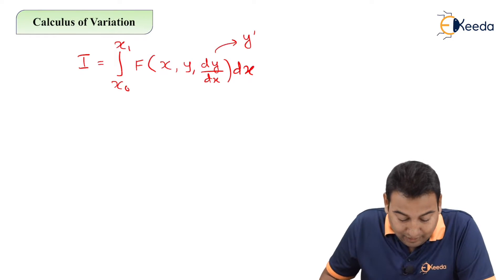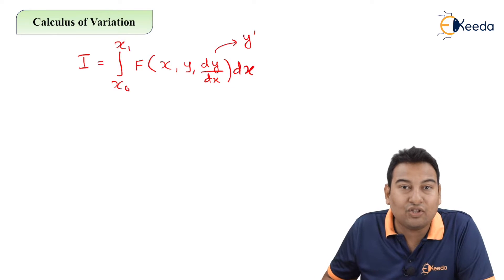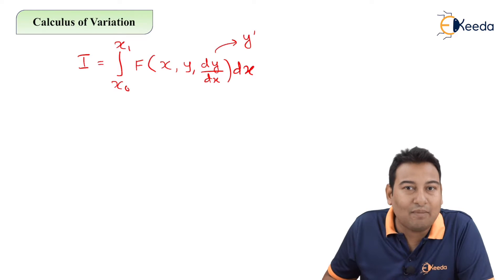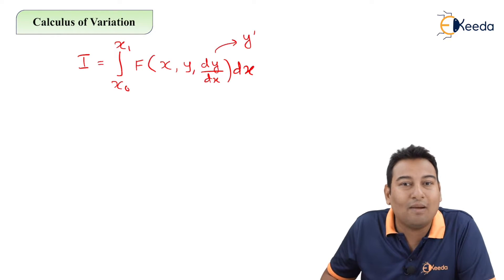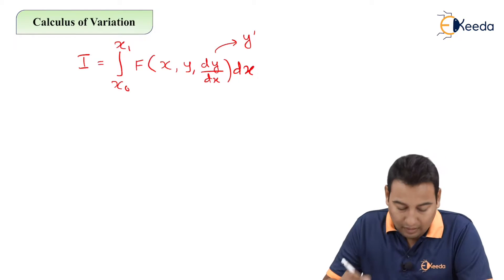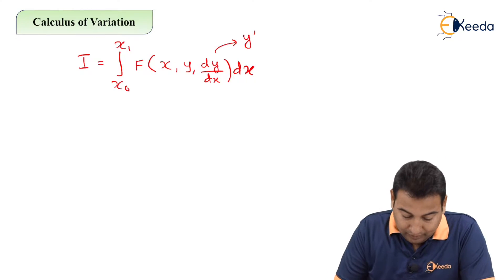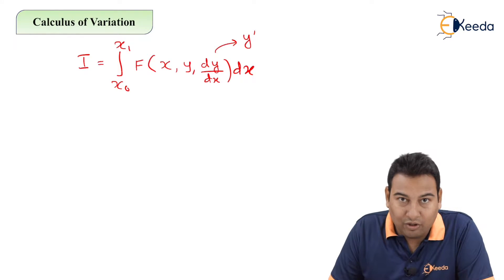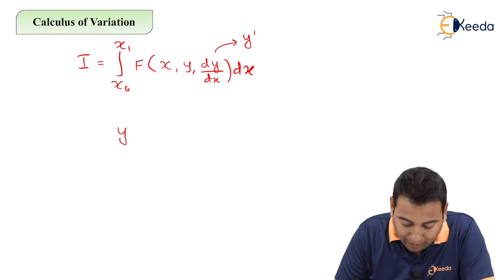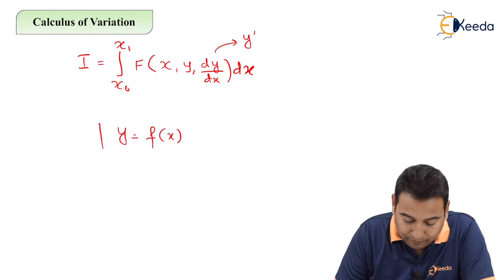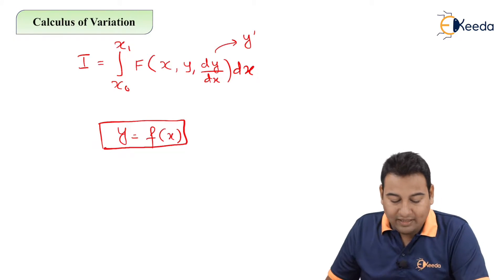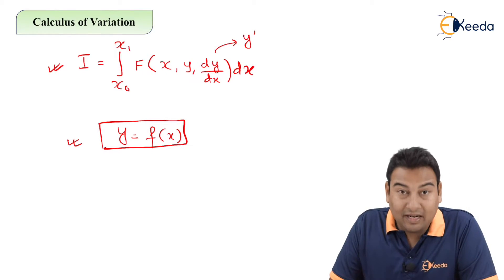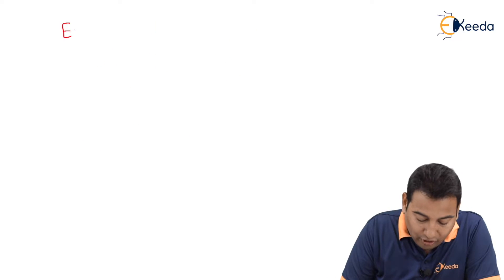In calculus of variation, we are going to find the extremal points — also called stationary points, or in common language, maxima or minima. For finding that, we have Euler's equation. My aim is to get the value of y, that is, y = f(x). That is the solution. Let me write down the Euler's equation.